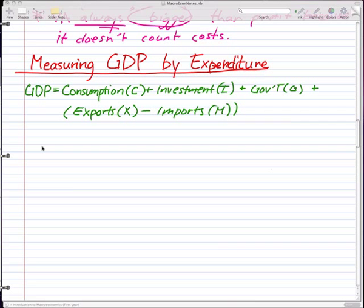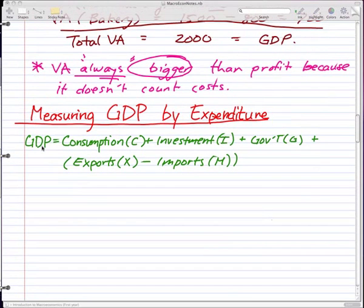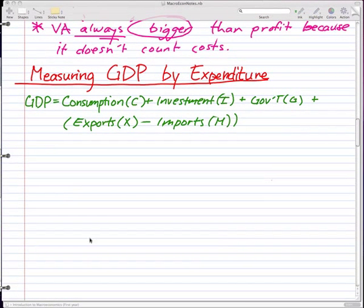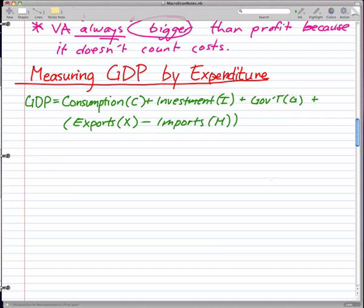Measuring GDP by expenditure. What I have here is a formula for GDP. It is consumption plus investment plus government plus exports minus imports, with abbreviations C, I, G, X, and M. We can shorten this to: GDP equals C plus I plus G plus X minus M.